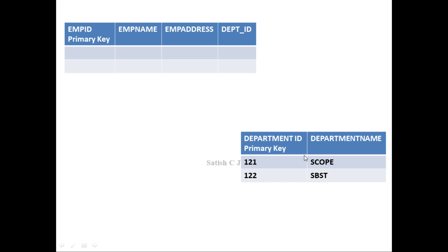We have two departments in our university with some employees working for them. Let's enter a record for employee Satish: employee ID 451, address from Chennai. Satish is working for one of the departments, so whatever value is entered in the department ID must be present in the department ID column of the department table — only then will it be a valid record. If Satish works for Scope, we enter department ID 121, and we can fetch his department details using that department ID column. This department ID is actually a foreign key — it comes from another table.